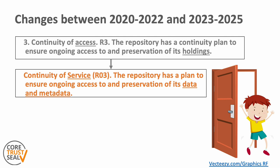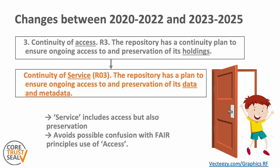What changes have been made to this requirement compared to the previous version of the requirements? The place in the order and structure of the requirements has remained unchanged — this requirement is still number three and it is still related to the topic of organizational infrastructure. What has changed is that the word 'access' has been replaced by 'service' and 'holdings' by 'data and metadata'. Also, the word 'continuity' has been removed as it was superfluous. The change from 'access' to 'service' more accurately reflects the scope of the requirement, since it covers ongoing services offered by the repository, including access, but also including measures to ensure ongoing preservation. It also avoids possible confusion with 'access' in the sense used by the FAIR principles.